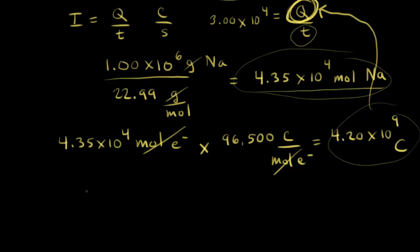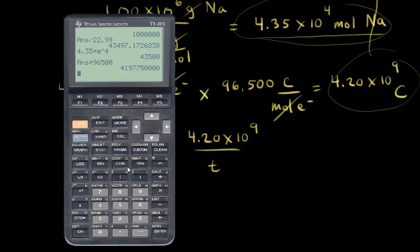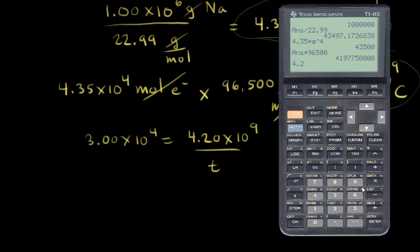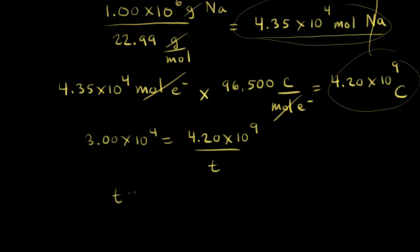So: 3.00 × 10⁴ amps equals 4.20 × 10⁹ coulombs over time. Solving for time, we divide 4.20 × 10⁹ by 3.00 × 10⁴, which gives us 1.40 × 10⁵ seconds.